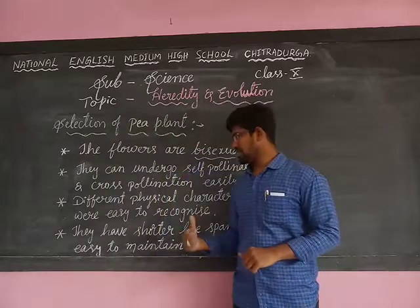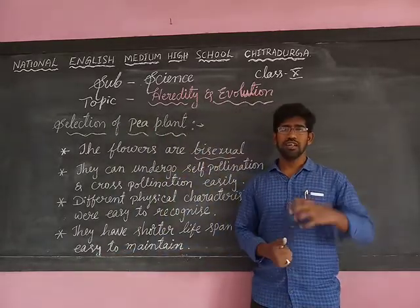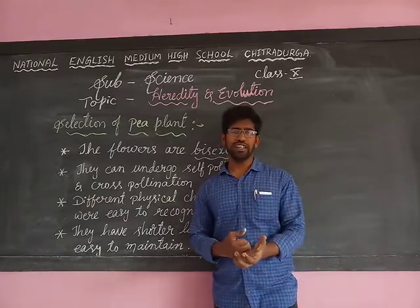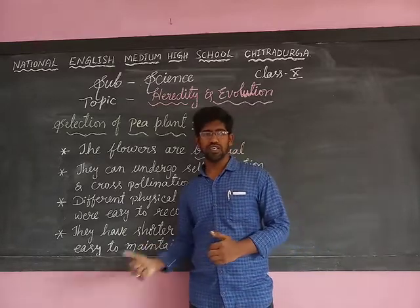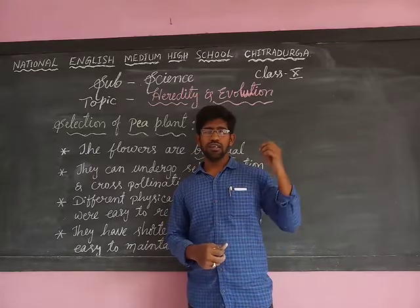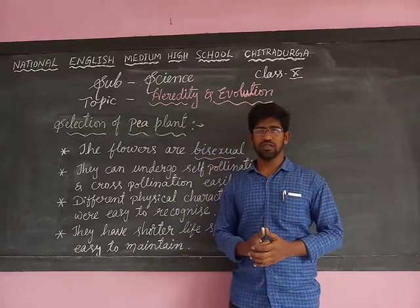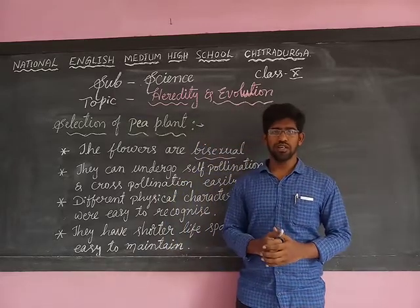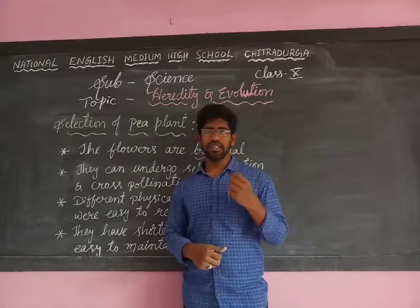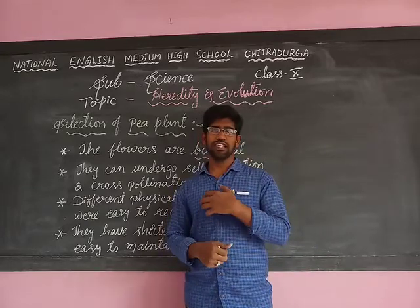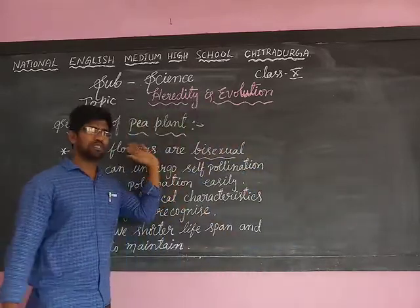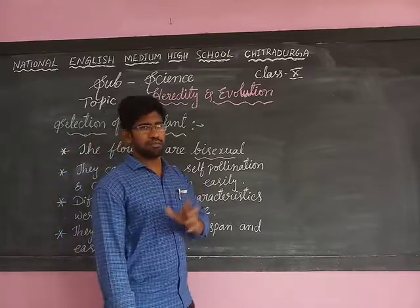Most importantly, these plants are easy to maintain — they do not require too many specific conditions. For example, they can grow in any weather conditions and in any type of soil, and we do not have to supply water regularly and continuously for the plants to grow. In all situations, these plants are growing and giving results, and most importantly, their characteristics are easy to recognize. These are the important characteristics of the pea plant, and because of them, Mendel selected the pea plant.